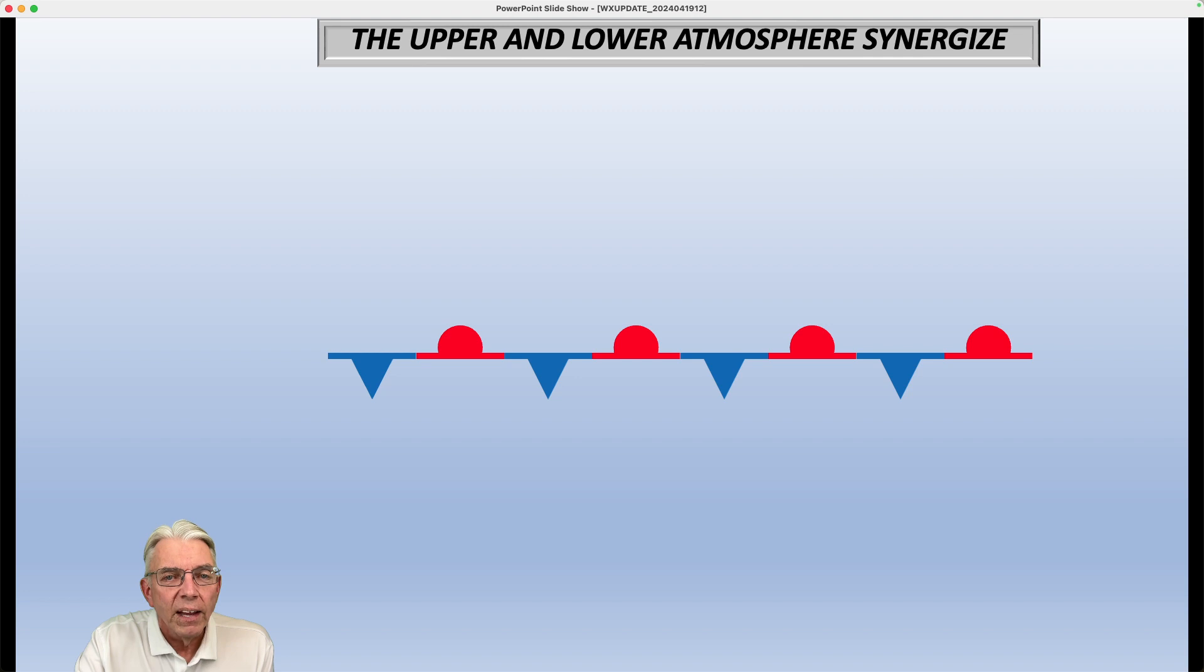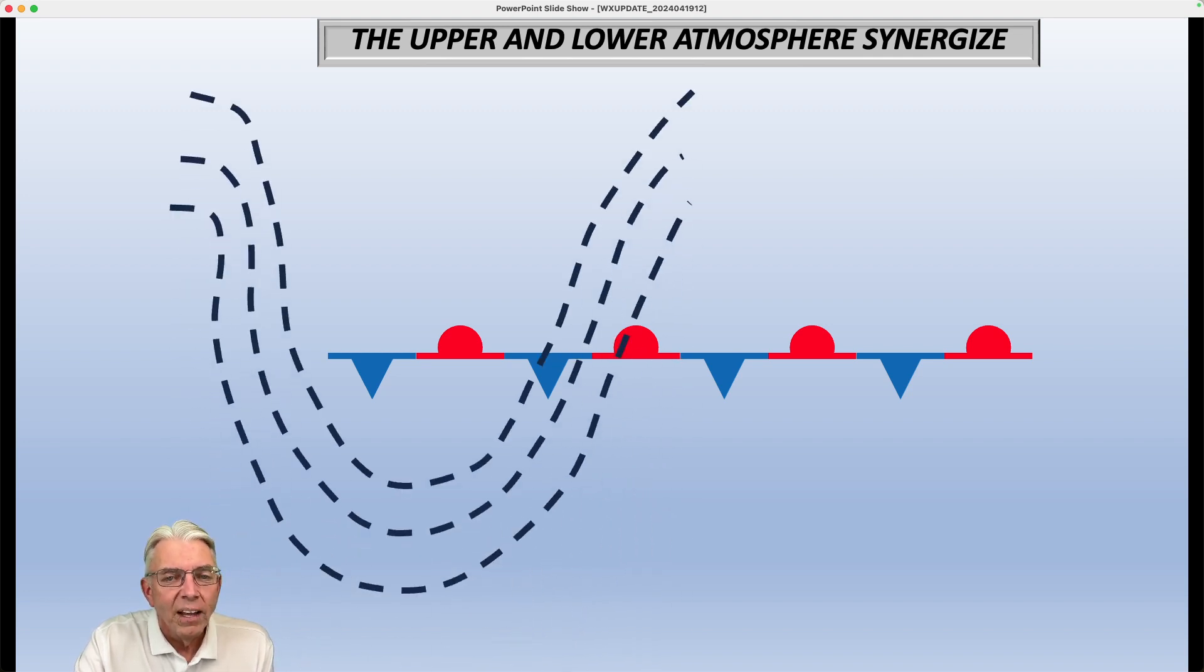Okay. So now we still have our front, and this is how the upper and the lower atmosphere synergize. So in the upper atmosphere, we have a trough. Or in this case, what we would call a short wave, where the wavelength is not all that terribly long, but the upper level winds would basically go from northwest to southeast, and then turn and go from southwest to northeast, and the trough axis would be in here.